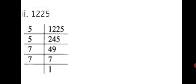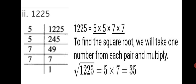Second sum: find the square root of 1225. This number is also divisible by 5, so we begin with 5 and find the remaining prime factors. Step 2: 1225 equals 5 into 5 into 7 into 7. We pair the same numbers — 5 and 5 make one pair, 7 and 7 make another pair. Step 3: taking one number from each pair and multiplying: square root of 1225 equals 5 into 7, which is 35. Therefore, the square root of 1225 equals 35.